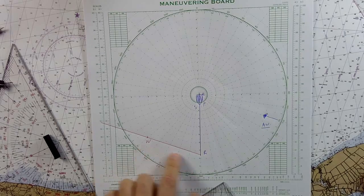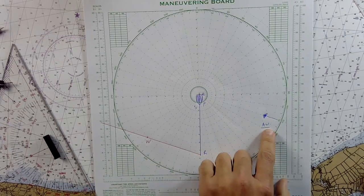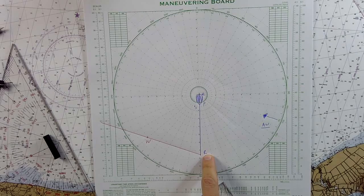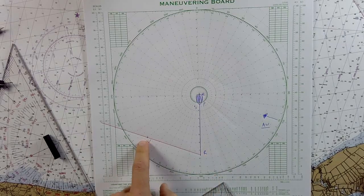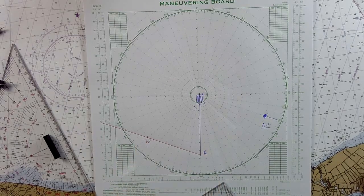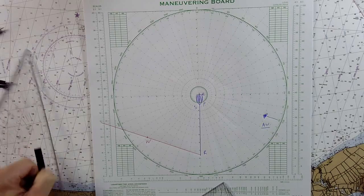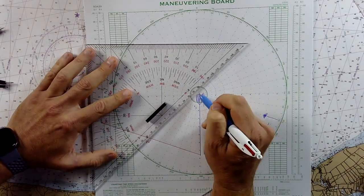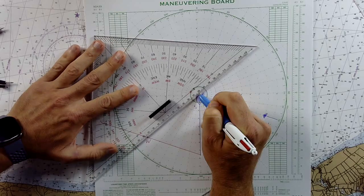So W sort of stands for relative wind or apparent wind here, R to W, but you've got your E to R vector for our course and speed, the R to W for the apparent wind vector, and then the answer is going to be from E to W. From E to W.